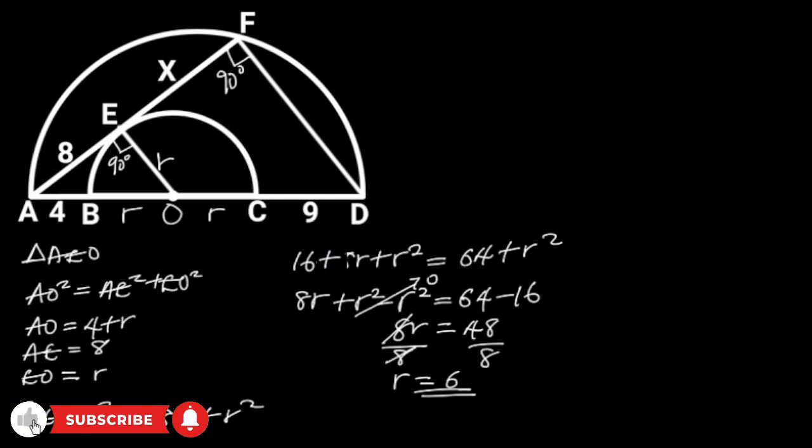Also, in triangle AEO, if we call this angle alpha, then the remaining angle of this triangle will be 90 degrees minus alpha. Reason: the sum of angles in a triangle is 180 degrees.